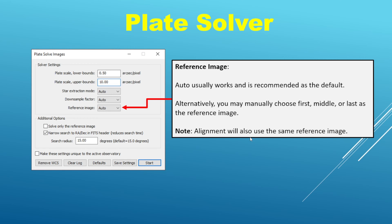Finally, we have reference image. This is actually a new feature — it used to be that the Plate Solver would always choose the first image in the data set as the reference image. Now you have the option of auto mode, which selects the image having the best quality stars, or you can manually choose the first, middle, or last image. Note that the alignment routine will also use that same reference image.